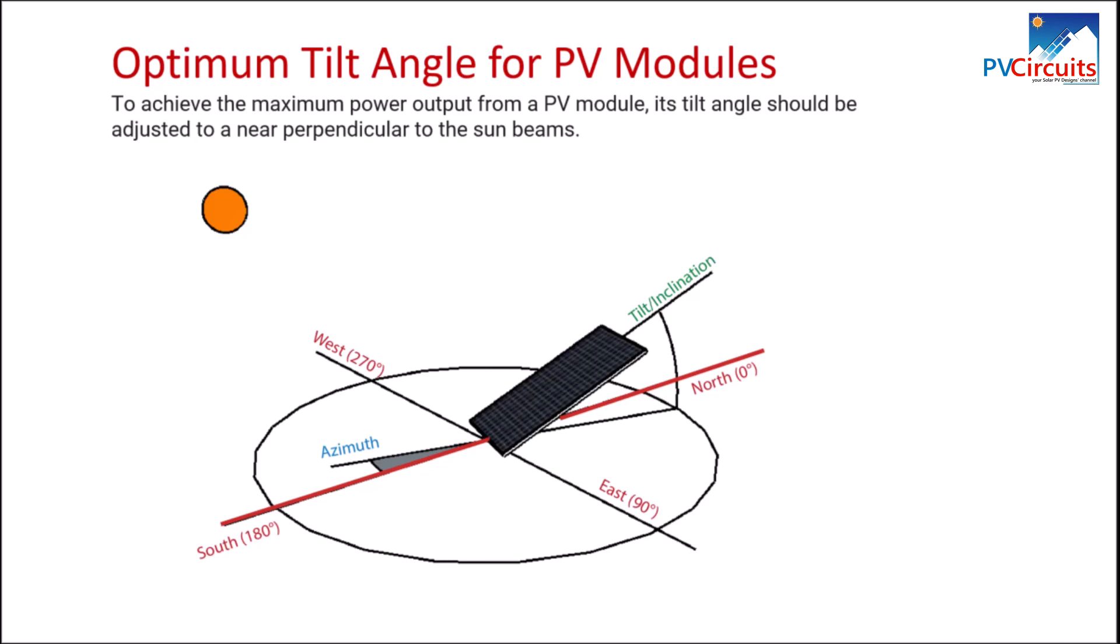The azimuth is based on compass direction to the north, with the north being zero degrees and south is 180 degrees. It is measured clockwise from due north.